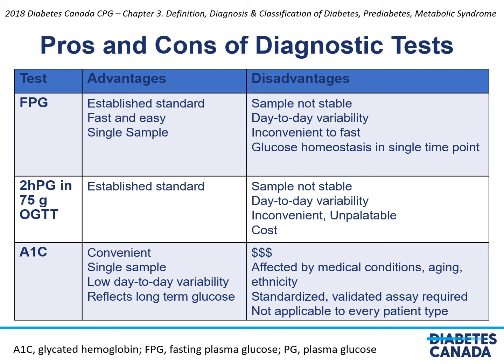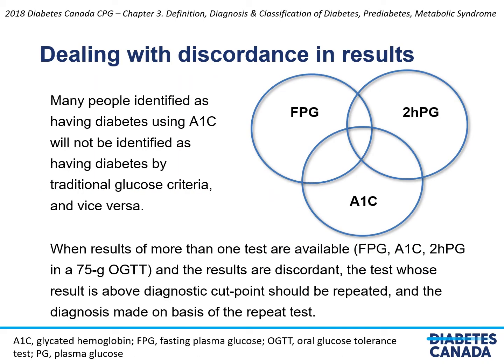The reasons to choose one test over another for making a diagnosis of diabetes may include the established history of that test as a standard for diagnosing diabetes, convenience and palatability for the patient, cost of the test, and other comorbidities or considerations that may make one of the tests less reliable. Patients will often have several glycemic tests done at the same time. In the majority of cases these tests will demonstrate agreement about the diagnosis. However, if the results are discordant, then the test whose result is above the diagnostic cut point should be repeated and the diagnosis made on the basis of the repeat test.